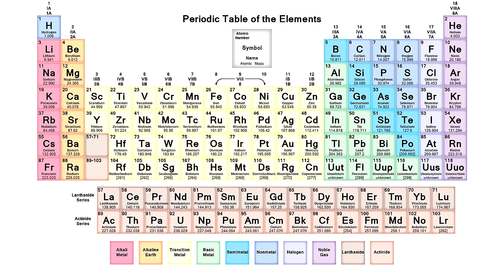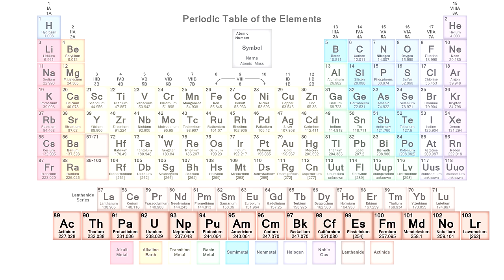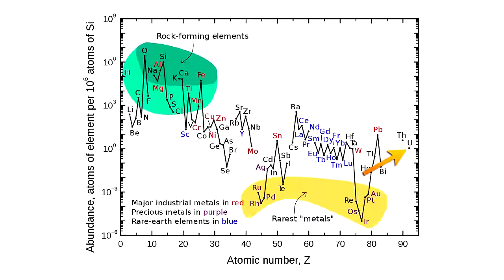Uranium belongs to the actinide series in the periodic table, that is to radioactive elements, and its atomic number 92. Uranium is 40 times more abundant in Earth's crust than silver.